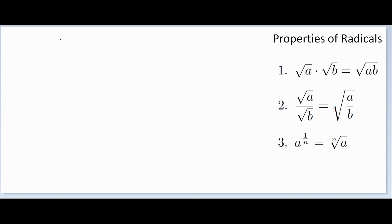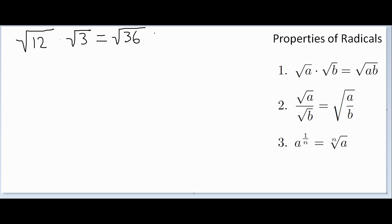Now let's look at how these properties can be implemented on the GMAT. For the first property — the product property — consider the square root of 12 times the square root of 3. That equals the square root of 12 times 3, or the square root of 36, which simplifies to just 6.